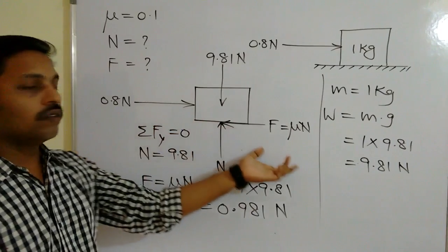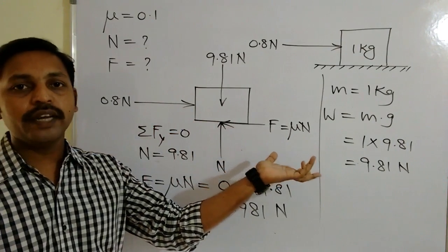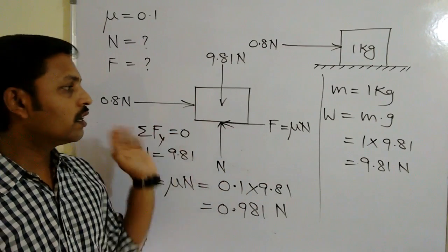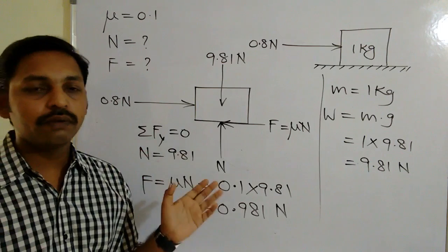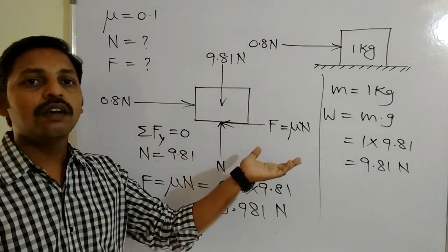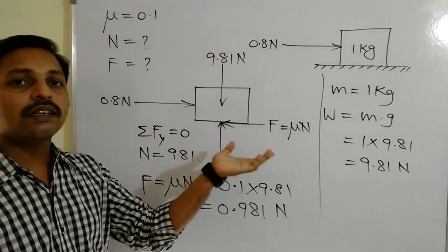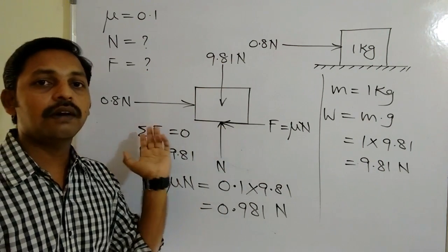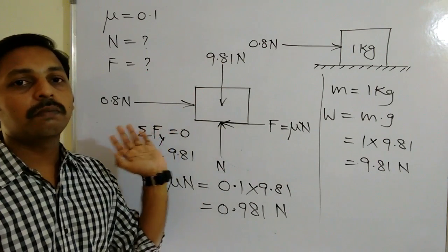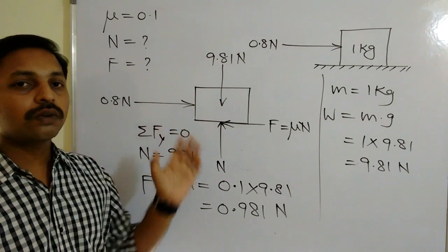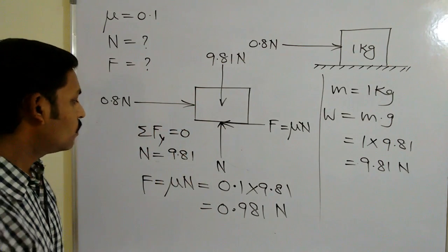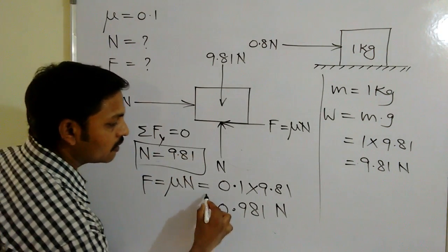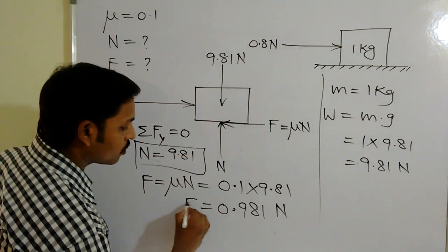If the applied force were also 0.981 newtons, the block would be under the state of rest at the boundary. Here, both forces are not equal — the frictional force is more than the applied force. Therefore, the block is not going to move. We have successfully calculated the normal reaction and the frictional force.